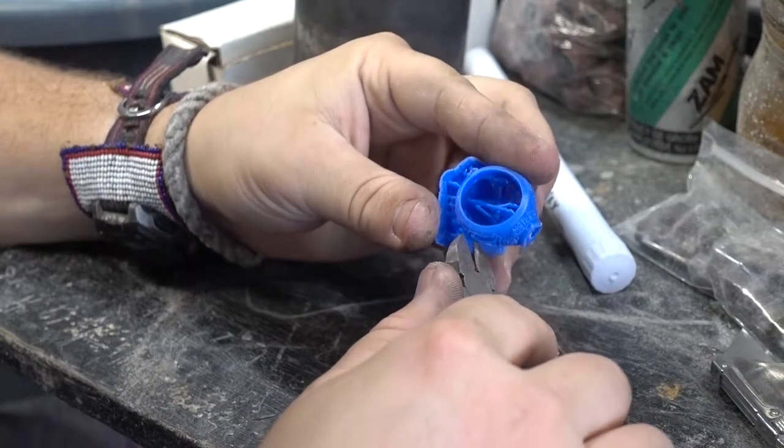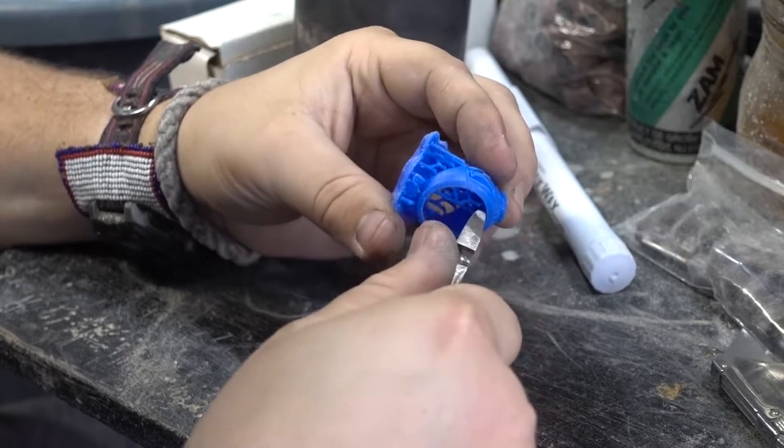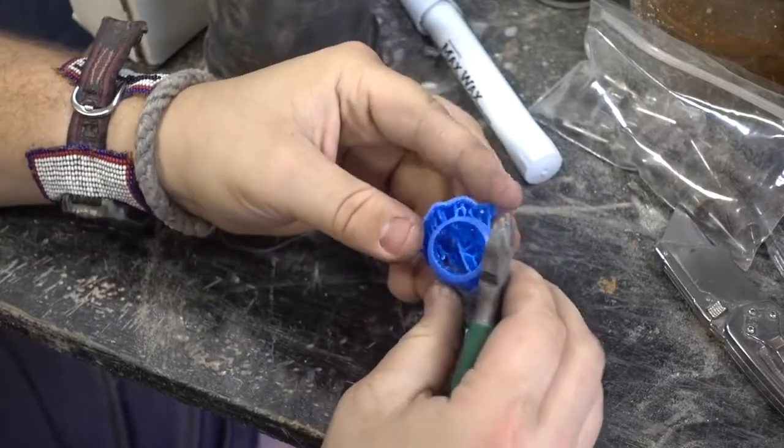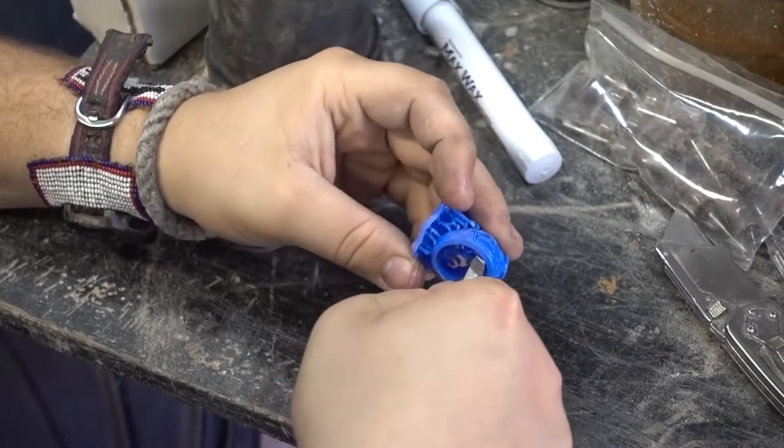We clip off all those supports, and then we take a sanding wheel and clean up all the excess nubs that might have been left, and engrave down into any grooves that might not have the full detail we want.